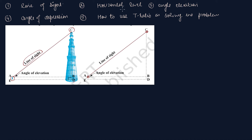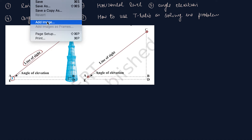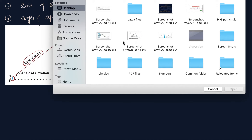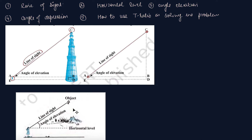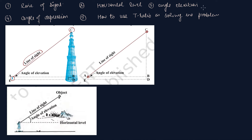दूसरा concept है हमें समझना है: horizontal level। Horizontal level को समझने के लिए हम एक image और आपके साथ share करते हैं। इस image से आप समझ सकते हैं कि horizontal level क्या होता है। यह रहा line of sight — पतंग को बच्चा देख रहा है, यह line of sight हो गया। और उसकी आँख से parallel, x-axis के उपर के parallel एक line खींच दें, इसको हम बोलेंगे horizontal level।